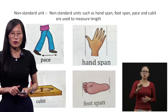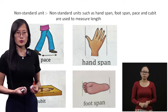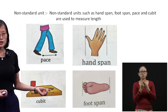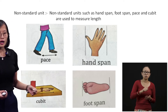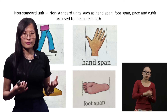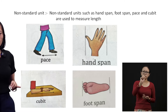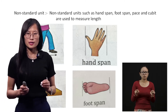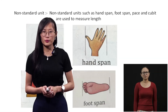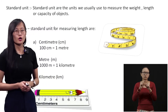It varies from one person to another. For example, you can measure the distance from your room to your kitchen using your pace, and if you ask your dad to do the same, it will be different because you have different sizes. That is why we need a standard unit. Standard units are the units we usually use to measure the weight, length, or capacity of objects.